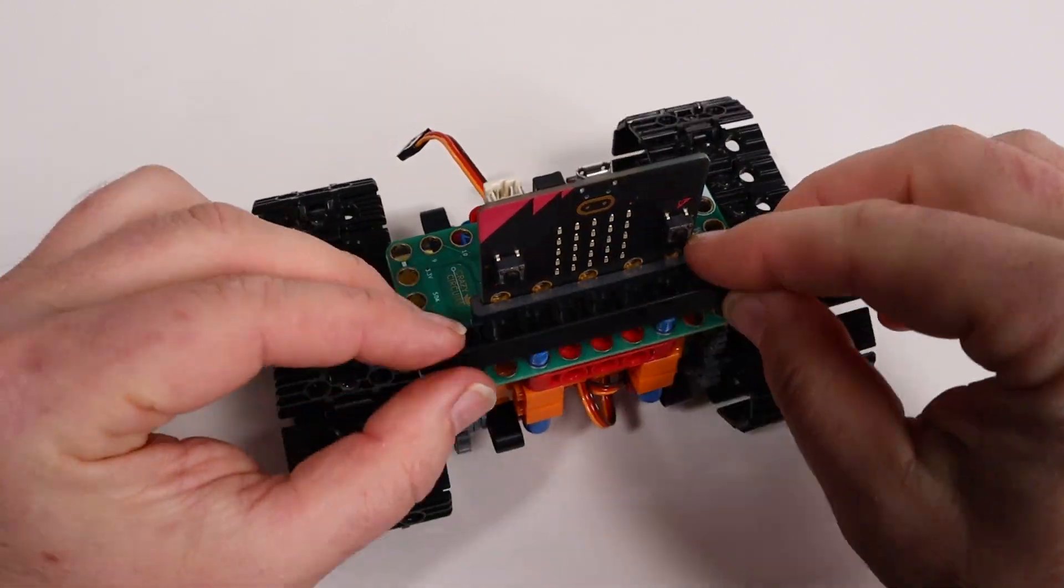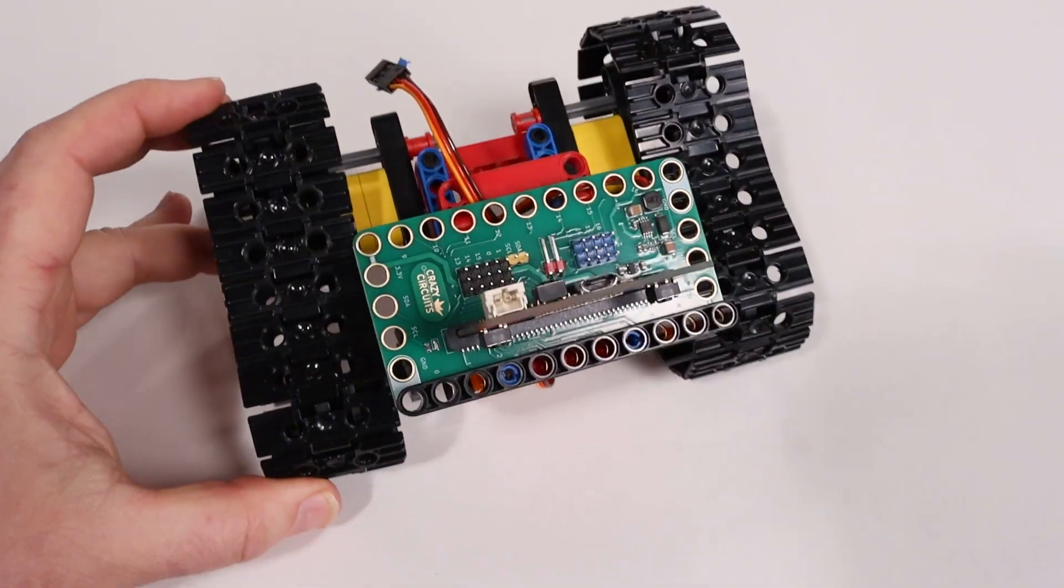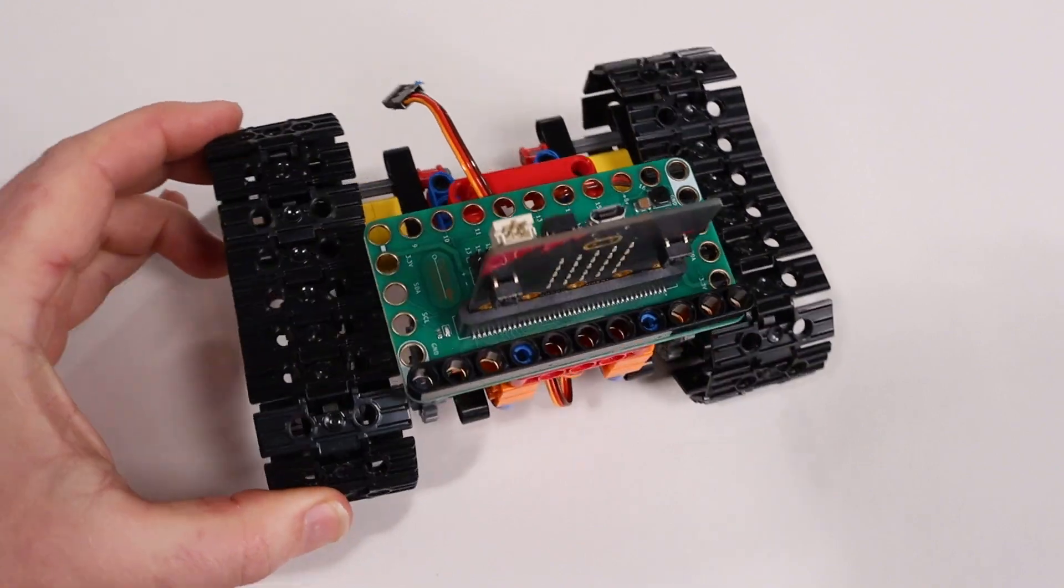If you'd like to have a tighter connection, simply add a beam right over the top of the bit board and snap it into place.